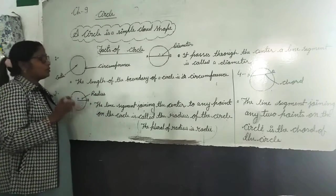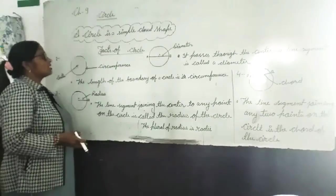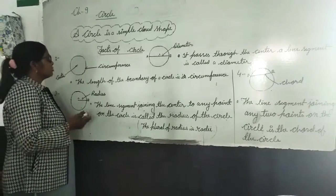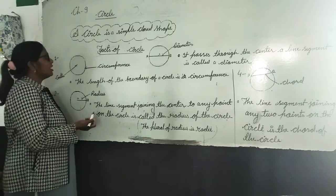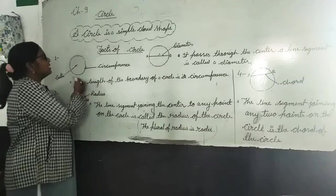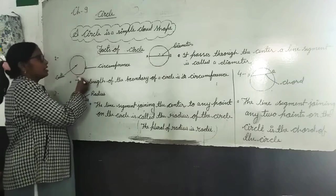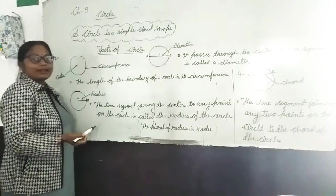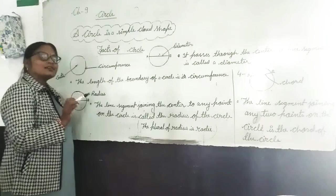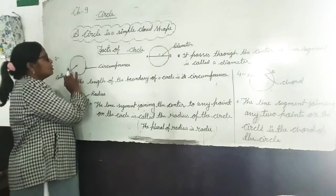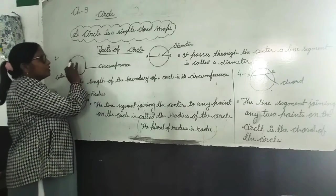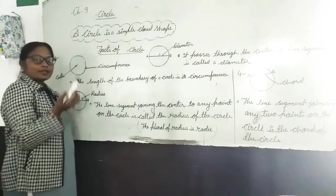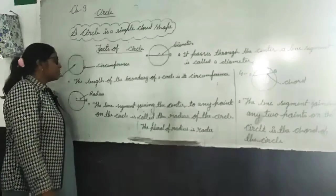Now we will know circumference. Circumference is the length of the boundary of the circle. The length of the boundary of the circle is called circumference.